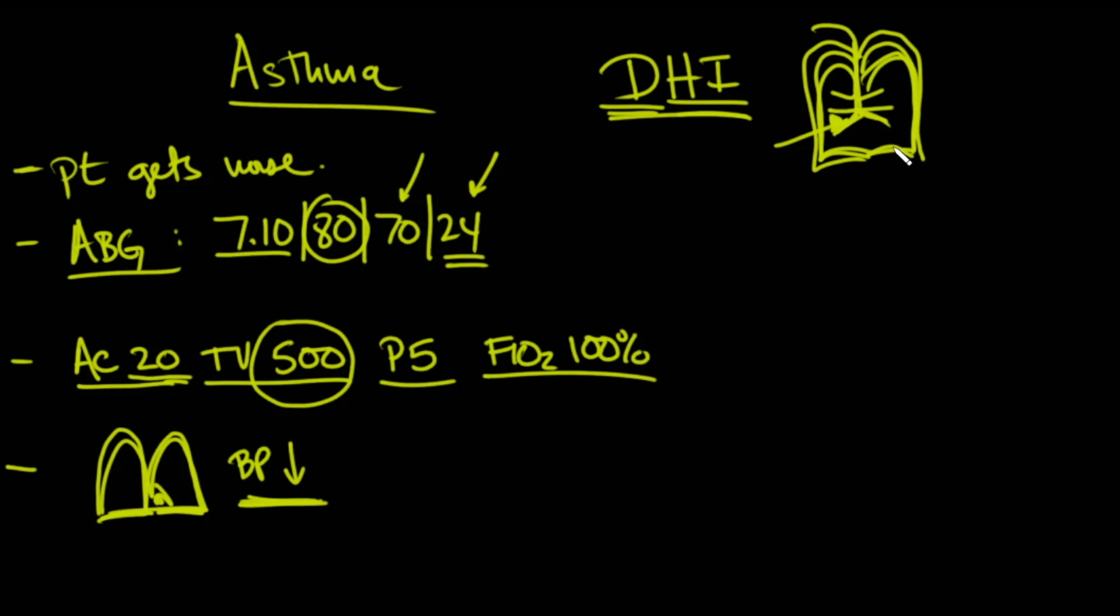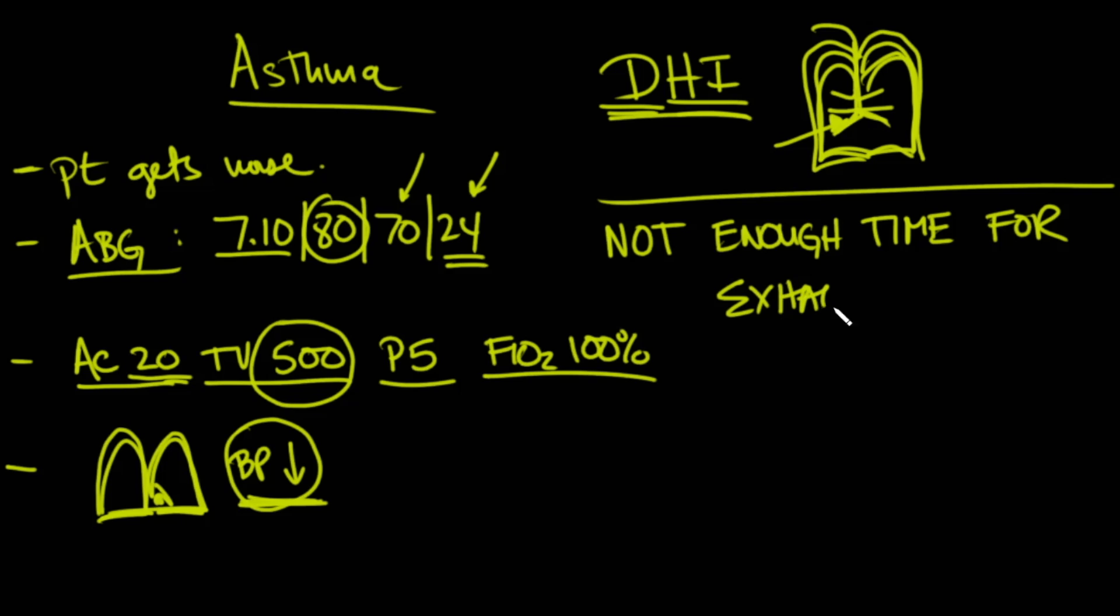So what happens there is that the intrapleural pressures start to increase, and that can prevent venous return. That can also increase your plateau pressures. It can also cause issues with peak pressures. And so the compliance of the lung becomes less and less and less. And with less venous return, you're going to get less cardiac output and a decrease in blood pressure. And so really, the crux here is that when patients have severe asthma exacerbations, and they're put on the ventilator, and they start to dynamically hyperinflate, the real key here is that there is not enough time for exhalation, exclamation point, triple underline. That could be potentially a serious, fatal situation where the patient could die because there's not enough time for exhalation.